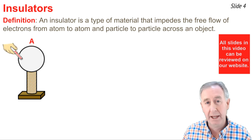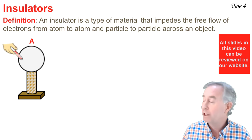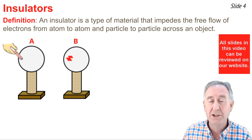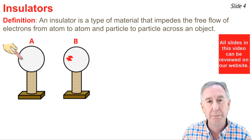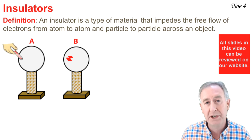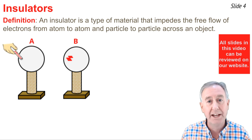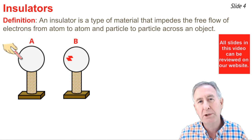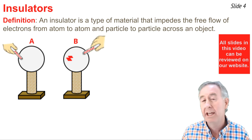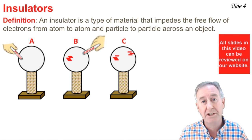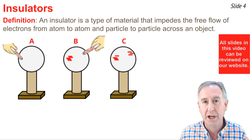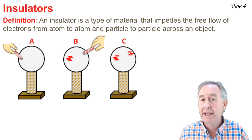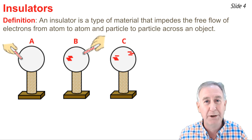Let's consider diagram A: a negatively charged object is touched to a neutral insulating sphere. When touched, excess negative charge is deposited upon the sphere as shown in diagram B. But because this is an insulator, that excess negative charge remains right at the point of contact. If we were to touch it a second time, there would now be two locations where excess negative charge enters the object, but because it's an insulating sphere, the charge remains put — it cannot move from atom to atom and particle to particle.